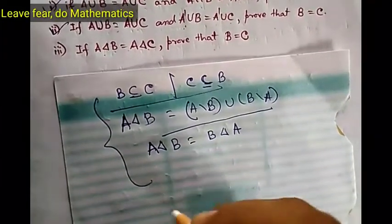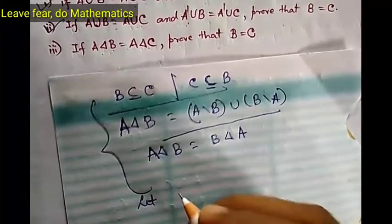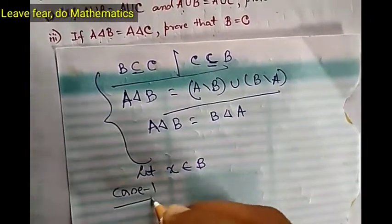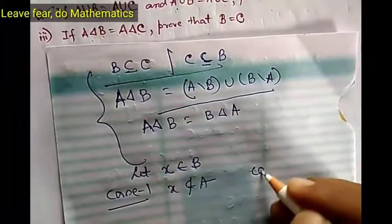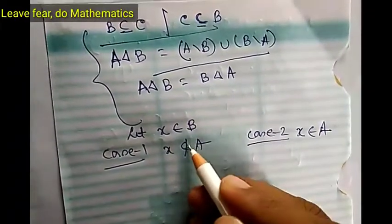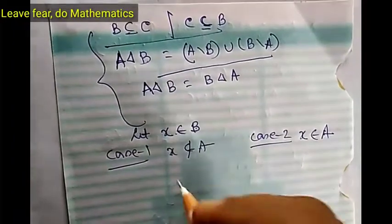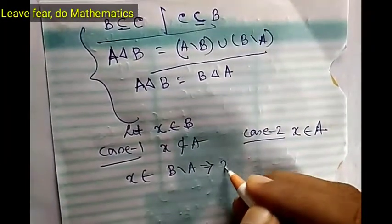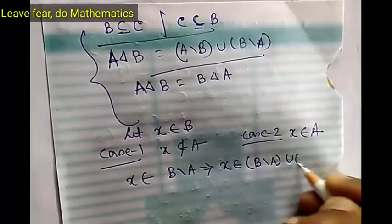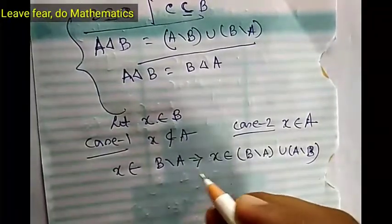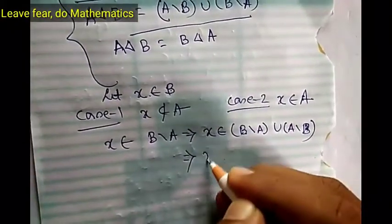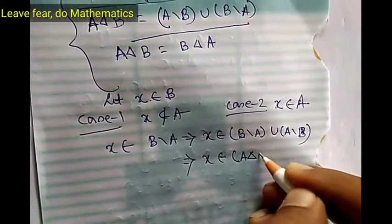Now we are going to prove the problem. Let X belong to B. Two cases may arise. Case 1: X does not belong to A. Case 2: X belongs to A. In case 1, X belongs to B and X does not belong to A — that means X belongs to B difference A. This implies X belongs to (B difference A) union (A difference B), because X belonging to a set implies X is in the union of that set with another set. So we can write X belongs to A symmetric difference B.